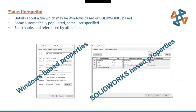Let's talk for a second about what file properties are, then jump into the custom property tab specifically. File properties are just details about a file. Even regular Word documents have Windows-based properties like file size or date created. And then there are SOLIDWORKS-based properties — things like part number and description that are specific to our industry.